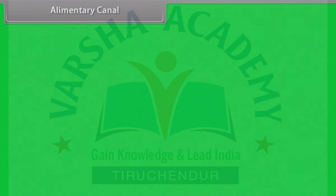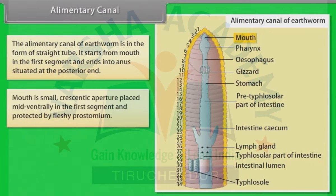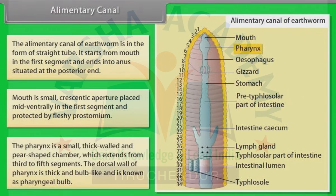Alimentary canal: The alimentary canal of earthworm is in the form of a straight tube. It starts from mouth in the first segment and ends into anus situated at the posterior end. The mouth is a small crescentic aperture placed mid-ventrally in the first segment, protected by the fleshy prostomium. The pharynx is a small, thick-walled, pear-shaped chamber extending from the third to fifth segments. The dorsal wall of pharynx is thick and bulb-like, known as the pharyngeal bulb.